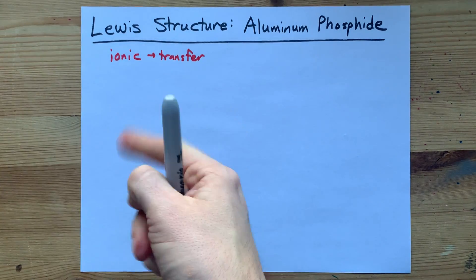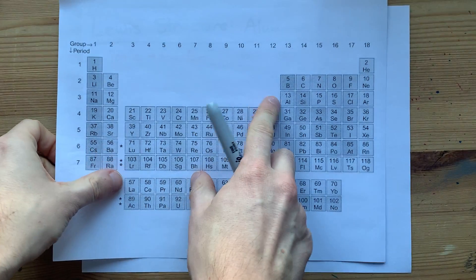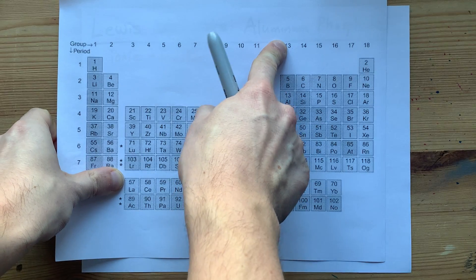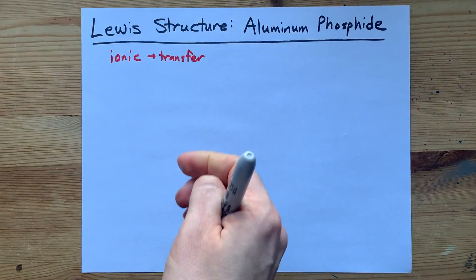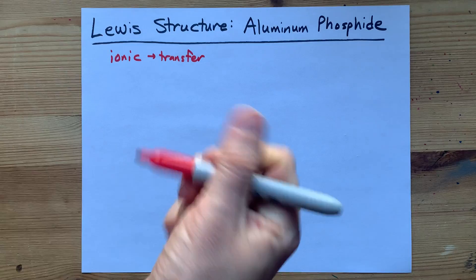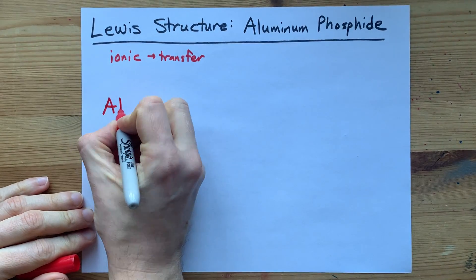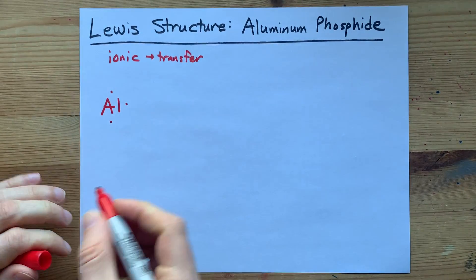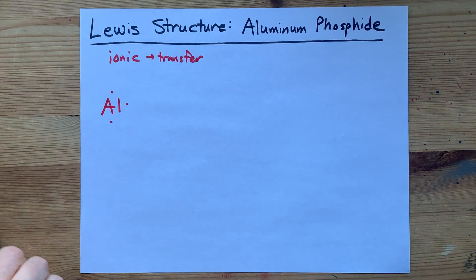To figure out where those electrons are, let's take a look at aluminum, which is in group 13. That means it begins with three valence electrons: one, two, three electrons in its outer shell to start with.